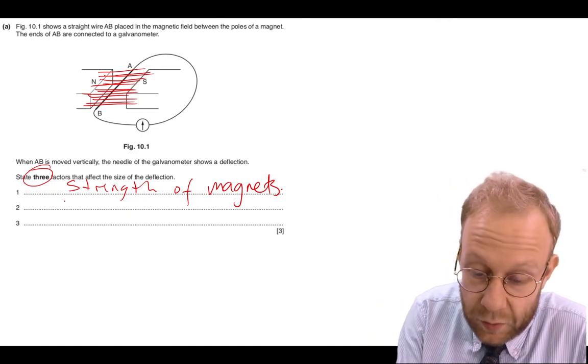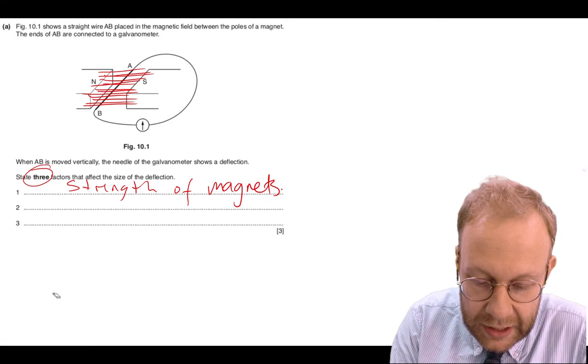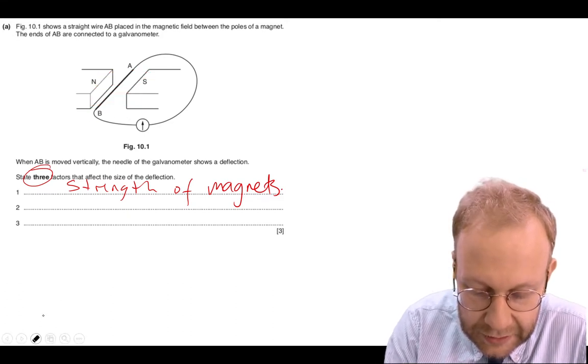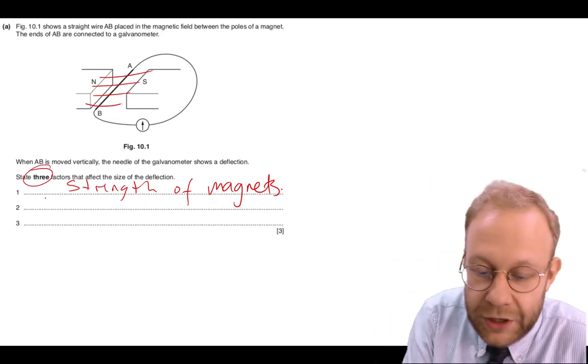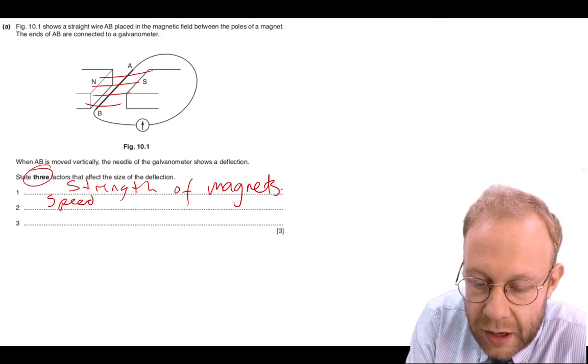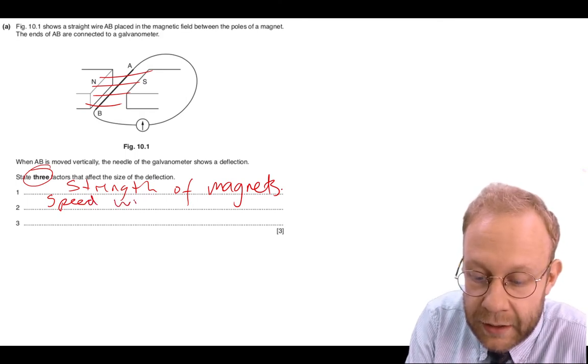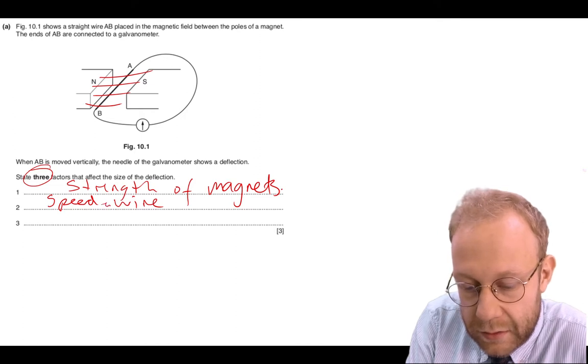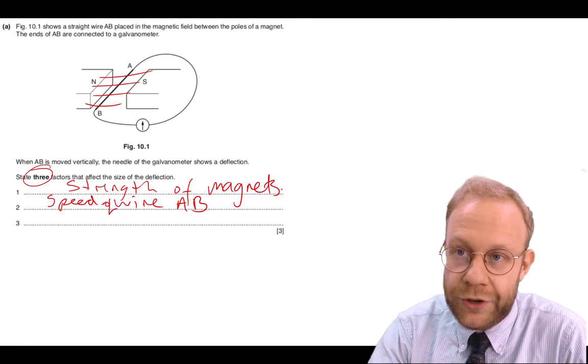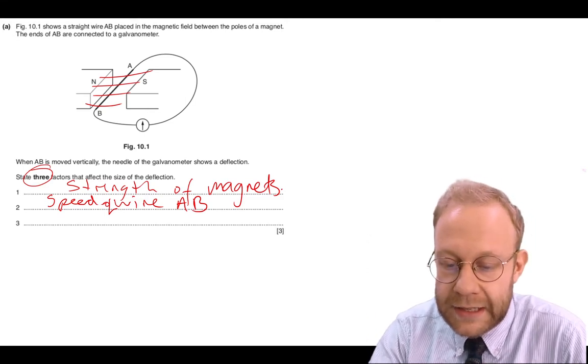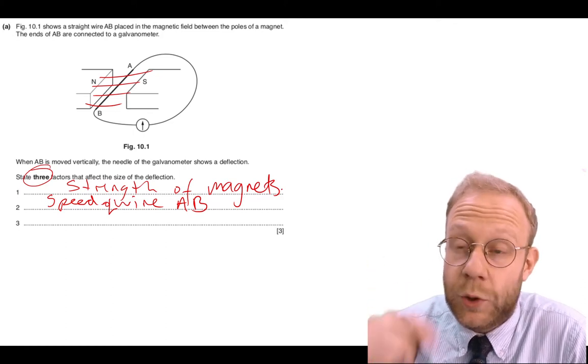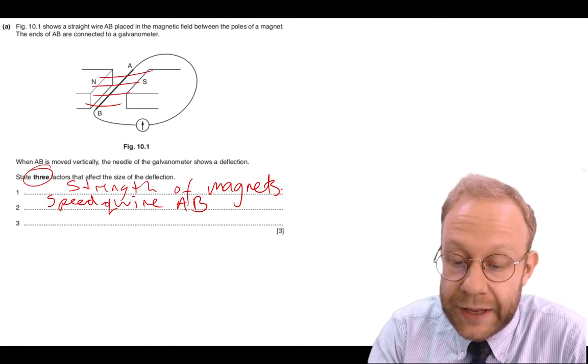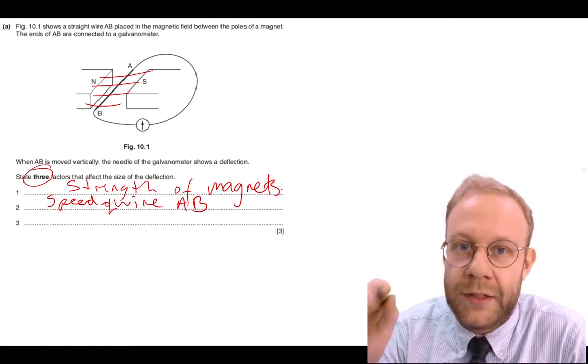The second way to increase that deflection is to do with the field lines. If we go back to having just our standard field lines in there, if we increase the speed at which wire AB cuts through the field lines, that means essentially per unit of time, it's cutting more field lines because it's moving faster. That will give us a greater induced current and greater deflection.